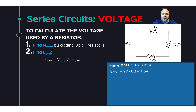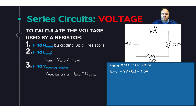Now we can find the voltage used by each resistor. Looking at the one-ohm resistor first: using Ohm's law, we multiply the total current going through the circuit — which is also the current through that resistor — by the amount of resistance. So 1.5 amps times one ohm gives us 1.5 volts.